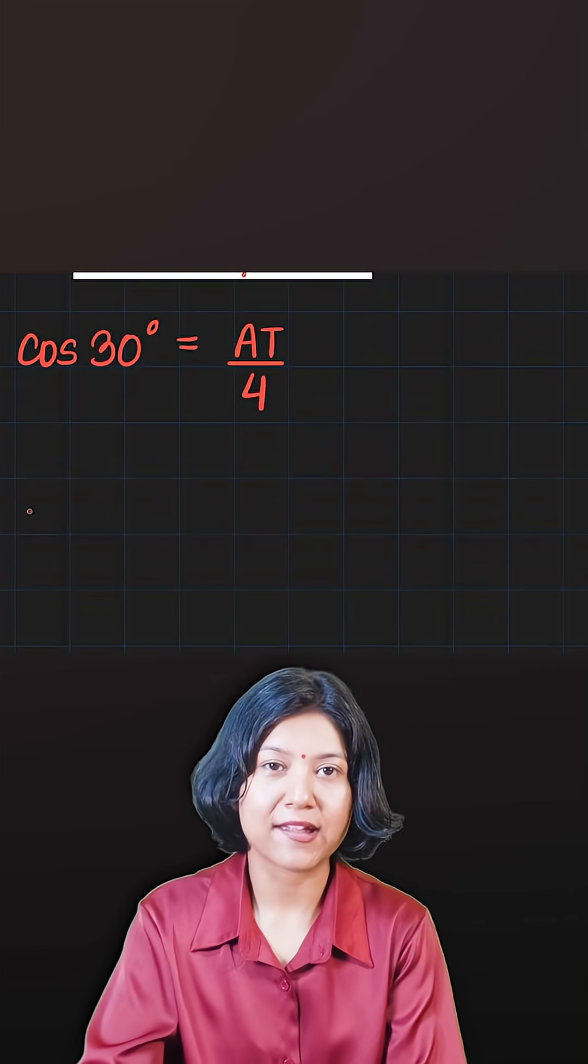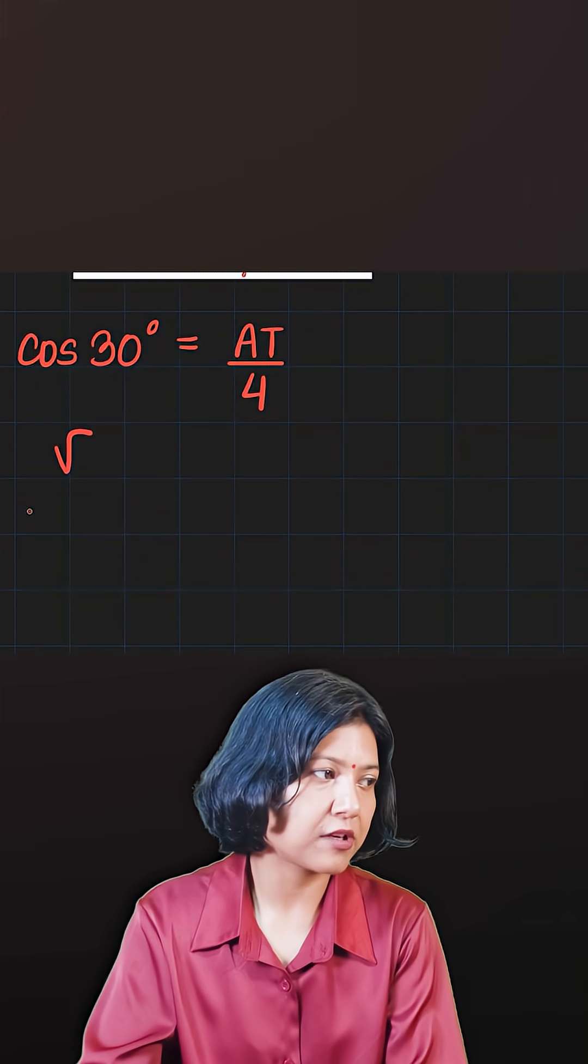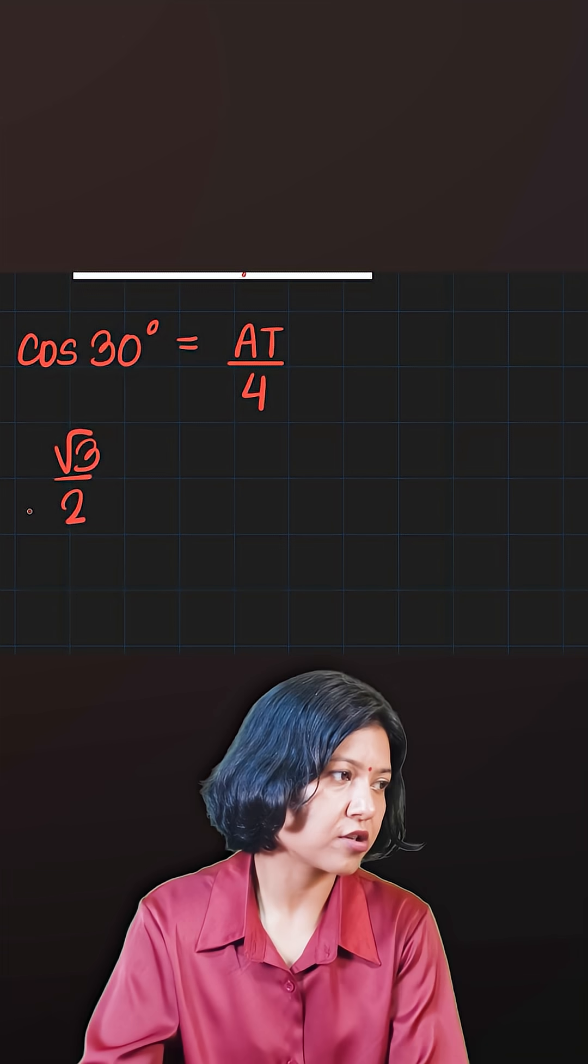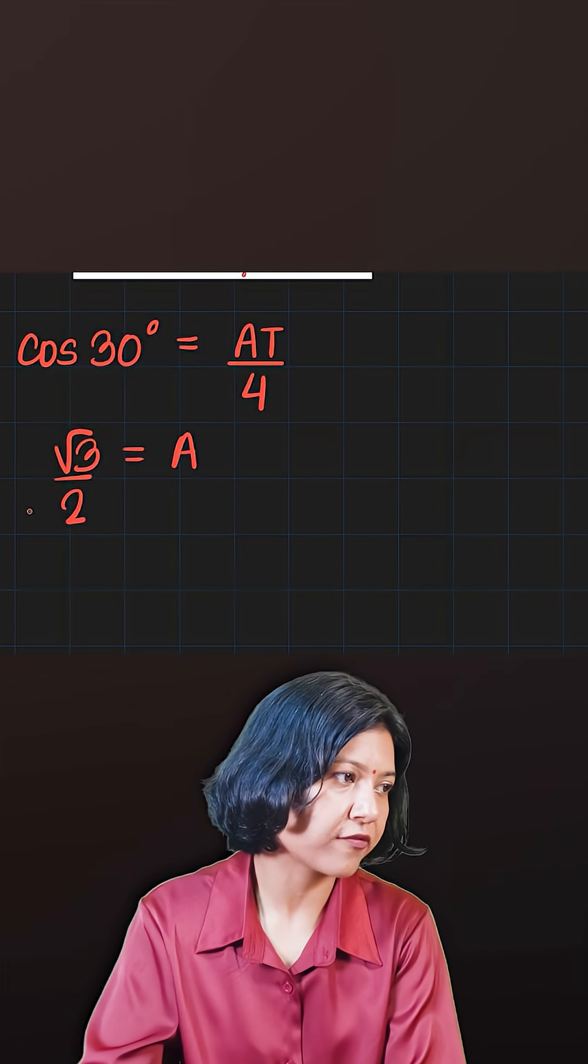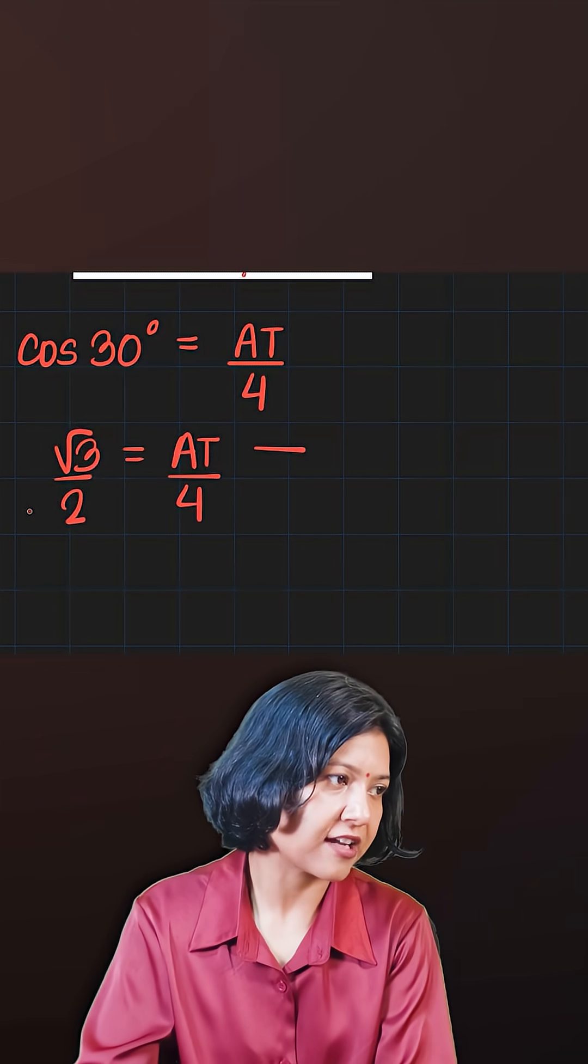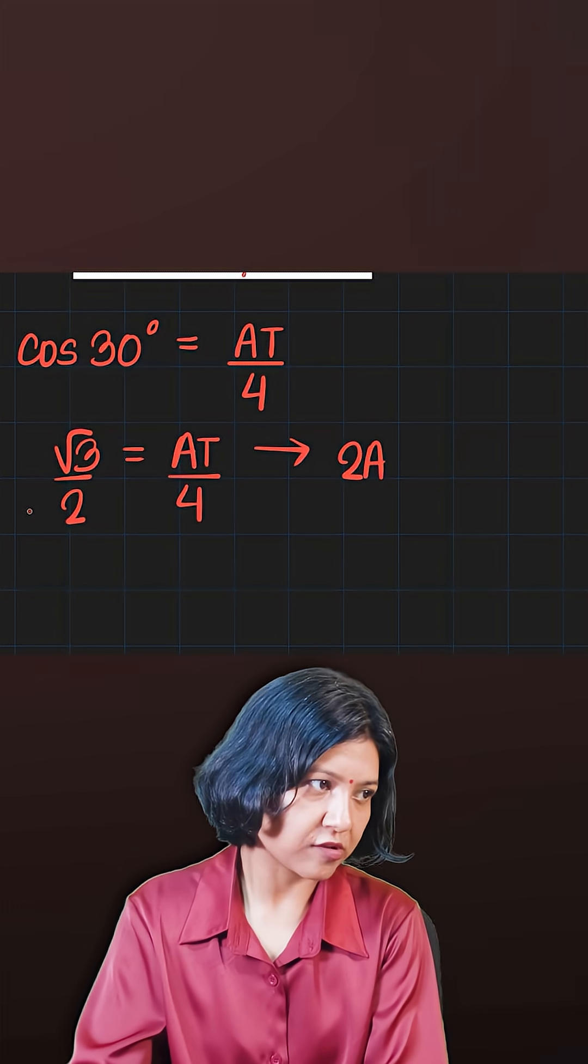So root 3 upon 2 equals to AT upon 4. Cross multiply and you get 2AT equals to 4 root 3. Divide both sides by 2 and you have the answer.